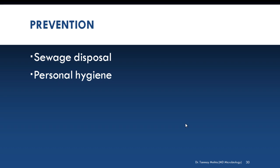Key points about Giardia: it is the only protozoan parasite found in the lumen of the small intestine. It has tennis racket-shaped motile trophozoites that exhibit falling-leaf motility. The oval cyst with four nuclei and remnants of flagella is the infective form. Clinical features may range from asymptomatic to watery diarrhea to fatty diarrhea. Diagnosis is by demonstration of trophozoites or cysts in stool or by serodiagnosis by ELISA. Treatment is metronidazole and tinidazole. Thank you.